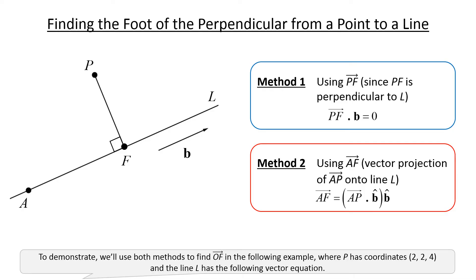To demonstrate, we will use both methods to find OF in the following example, where P has coordinates and the line L has the following vector equation.